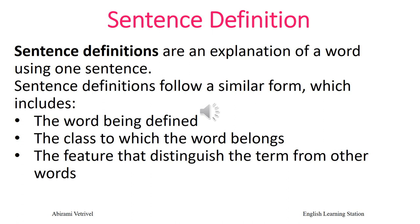There are times when a few words are not enough to explain a technical term. In such cases, the definition provided needs to be more extensive. Sentence definitions can provide the additional information needed to help increase comprehension. Sentence definitions are an explanation of a word using a complete sentence, and they include the word being defined, along with the class to which the word belongs, the feature that distinguishes the term from other words, and the use or application of the word.